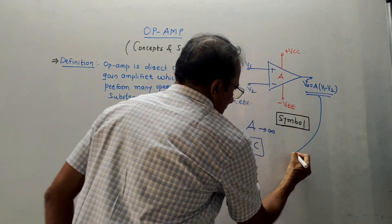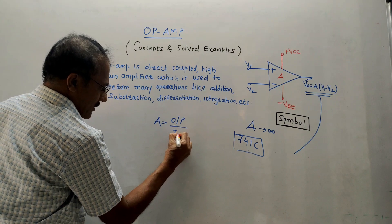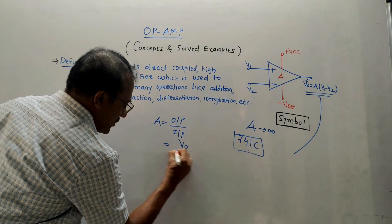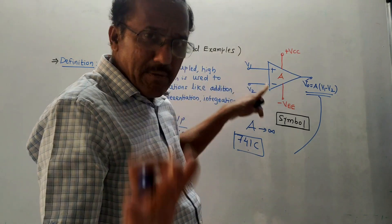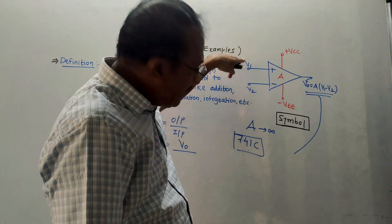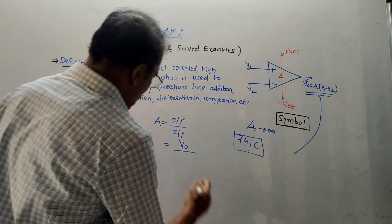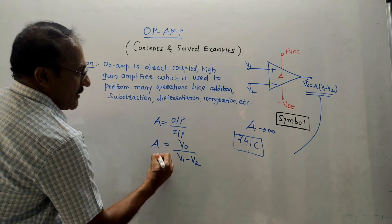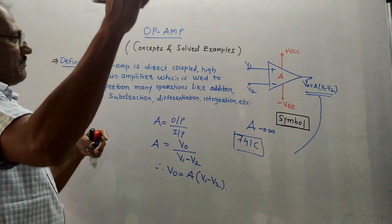The equation for gain is output upon input. Output is V0, and there are two inputs V1 and V2. The voltage connected to the positive terminal minus the voltage connected to the negative terminal gives the input voltage. So input is V1 minus V2. Therefore, V0 equals A times the bracket V1 minus V2.